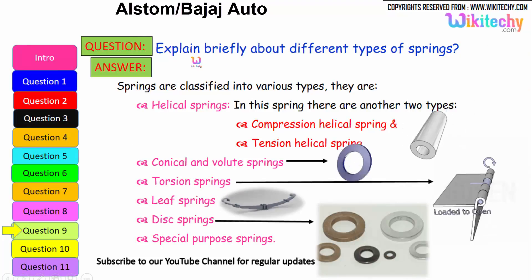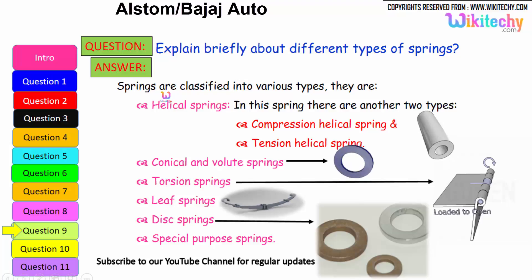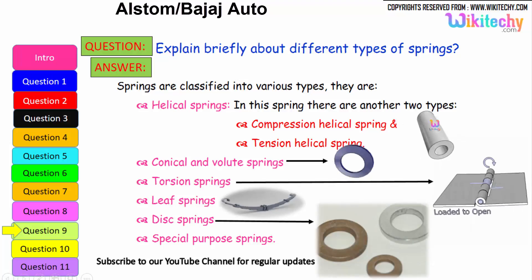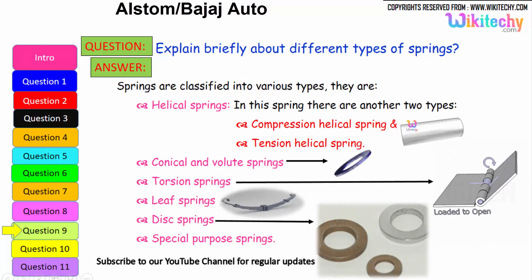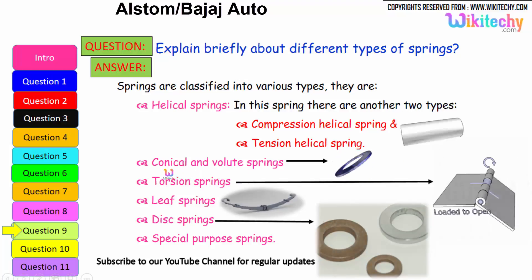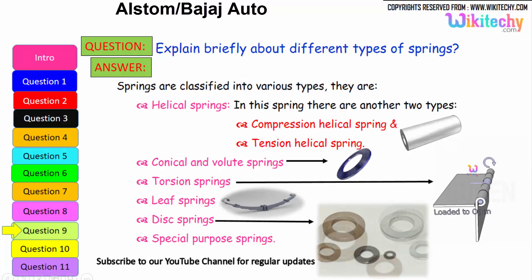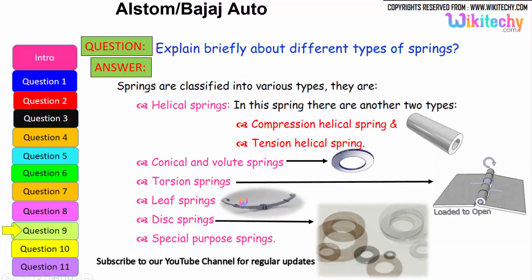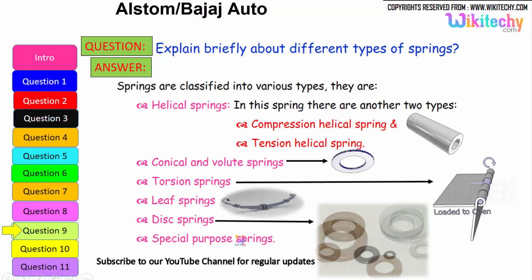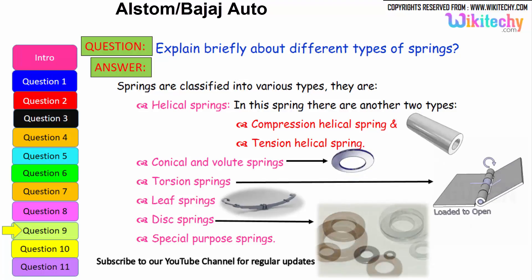Now let us see briefly the different types of springs. Springs are classified into various types: the first is helical springs, which have two sub-types — compression helical springs and tension helical springs. Next are conical or volute springs. Then torsion springs, leaf springs, and disk springs. There are also additional special-purpose springs. These are the different types of springs available.